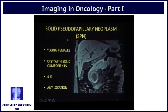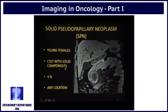Lastly, we come to the last of the common cystic neoplasms of the pancreas: solid pseudopapillary neoplasm, also called SPEN, SPN, or SPT. They occur in young females, have cysts with solid components, and may have hemorrhage within the lesion. They represent approximately four percent of cases.